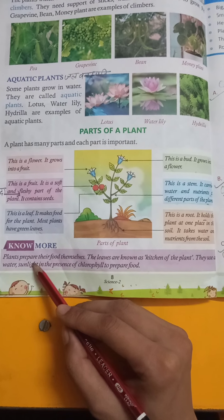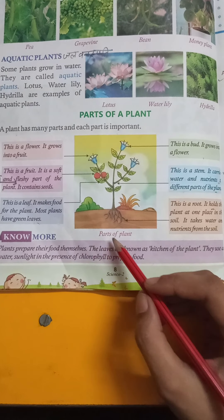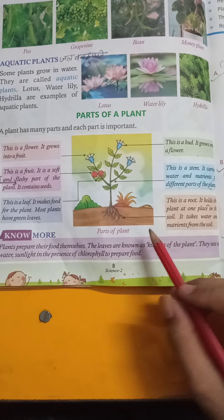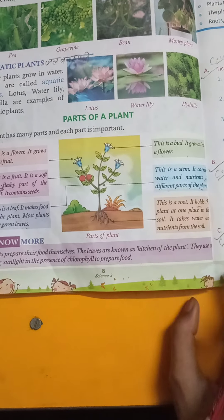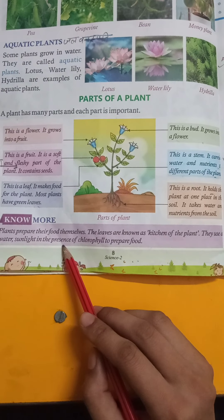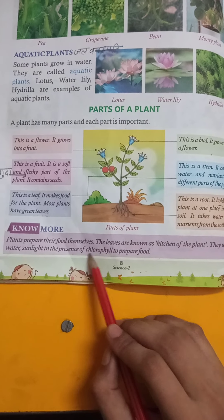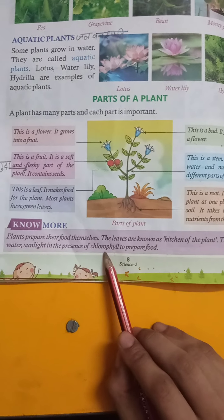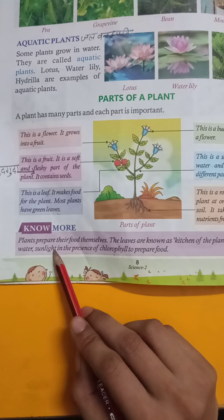Plants prepare their food themselves. The leaves are known as the kitchen of the plant. They use air, water, and sunlight in the presence of chlorophyll to prepare food.